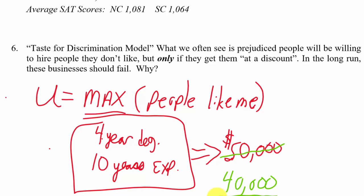By measuring what people should earn and comparing it to what they actually earn, we can estimate this discrimination coefficient. The idea is that it would be different for different employers and businesses — the degree of discrimination depends on how much someone dislikes working with a particular group.